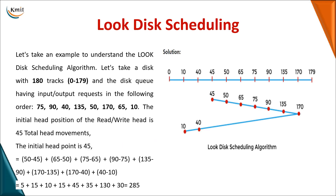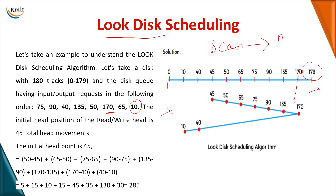The next algorithm is the LOOK disk scheduling algorithm. In SCAN, even if your last request is at track 170, the head moves all the way to 179. In LOOK, the head stops at the last request — it does not move to the absolute end. LOOK is similar to SCAN except the head only moves to the last request value, not the end of the disk. So instead of moving to 179, it moves only to 170. You start in one direction, reach the last request, then come back and service requests in the opposite direction.